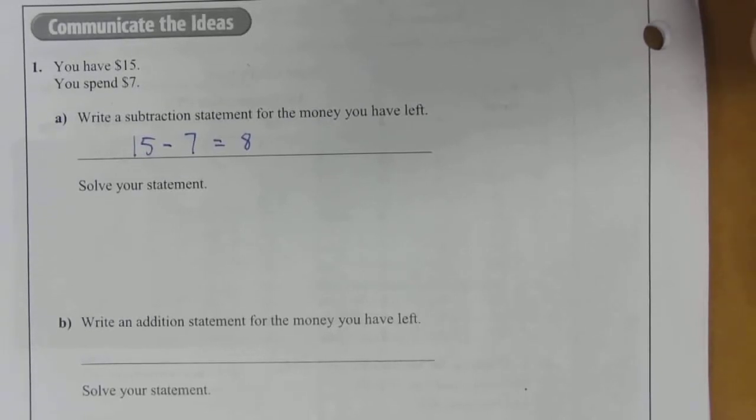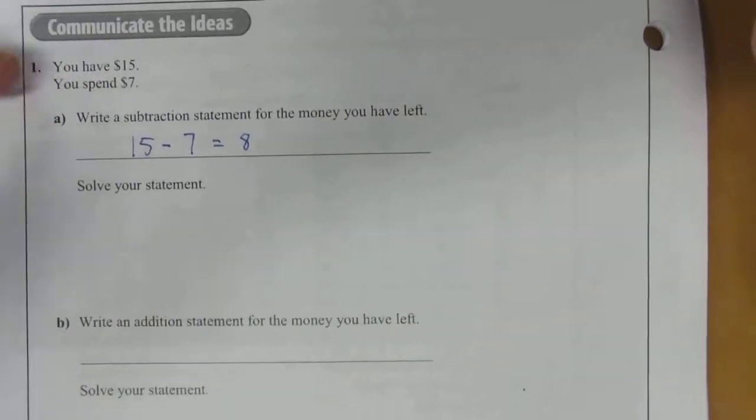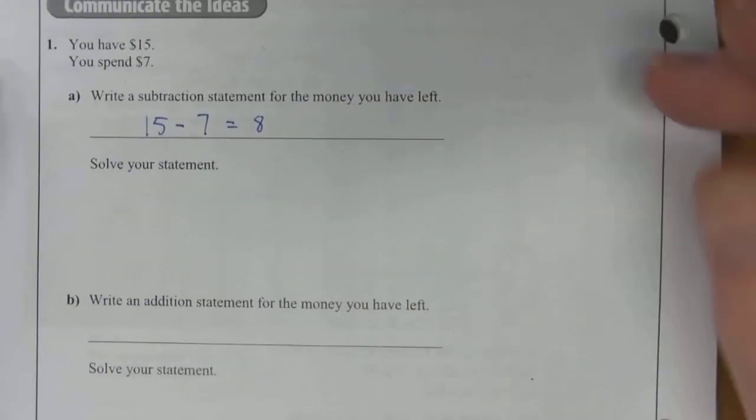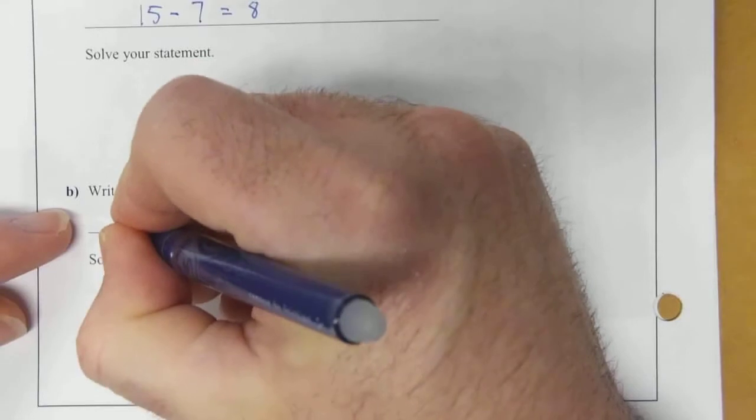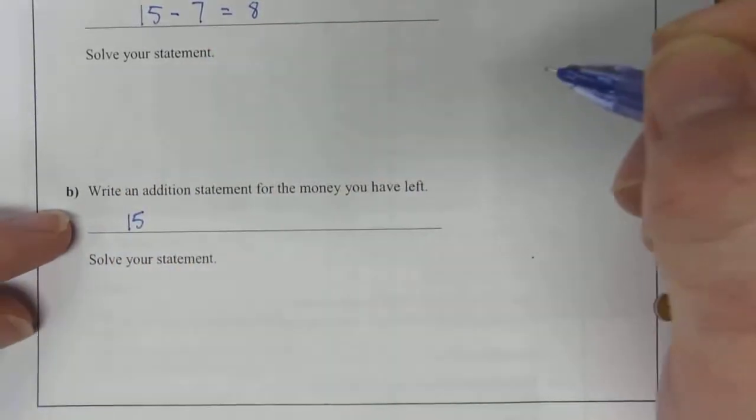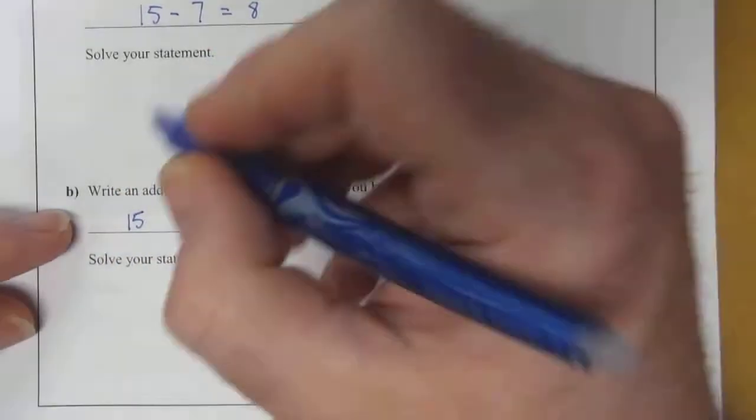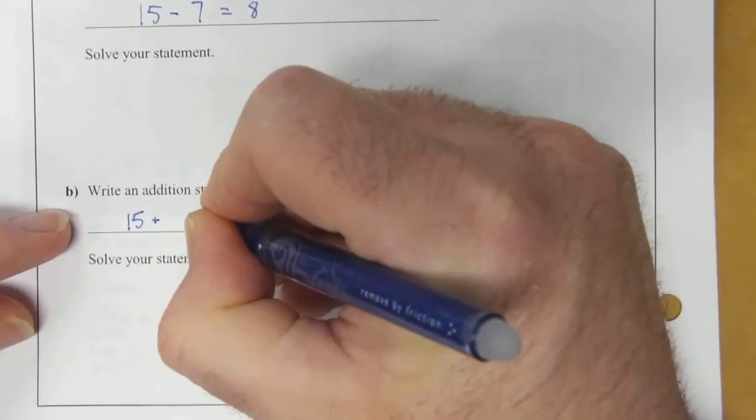So now you need to write an addition statement to express the money you have left. Well, if you've got 15 and you're having to do addition, you still want the number here to be 8. So the difference between 15 and 8 is still 7, but you're having to do addition.